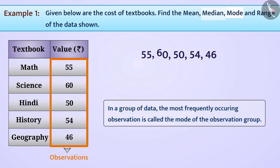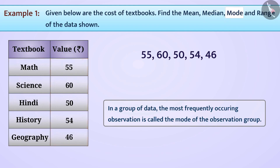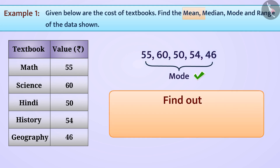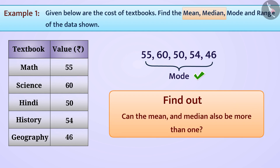In a group of data, the most frequently occurring observation is called the mode. Looking at the data for textbook costs, each observation has occurred at most once. This means all observations in this data are modes. This brings us to the conclusion that a data set can contain more than one mode. Do you think the mean and median can also be more than one for a data set? Why don't you find that out yourself?